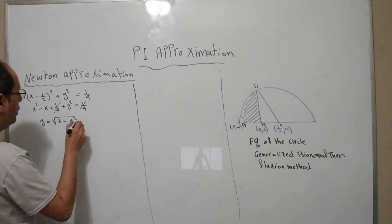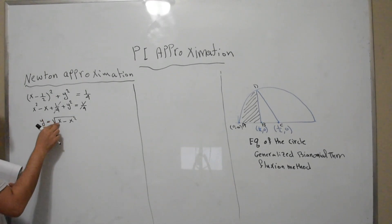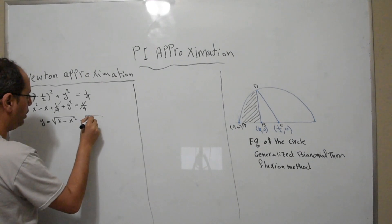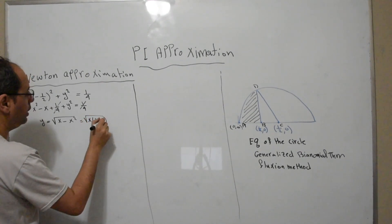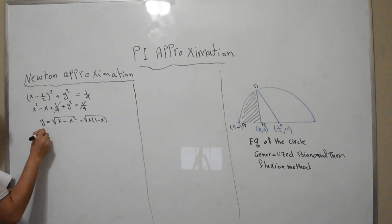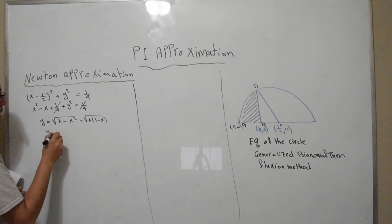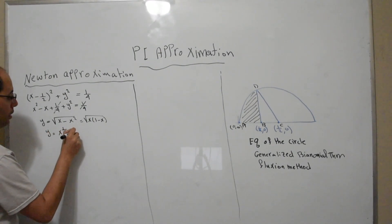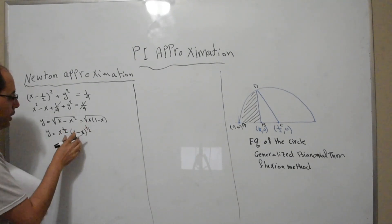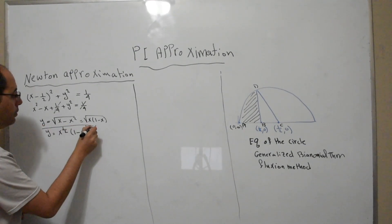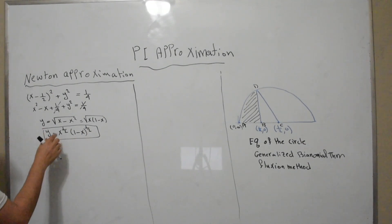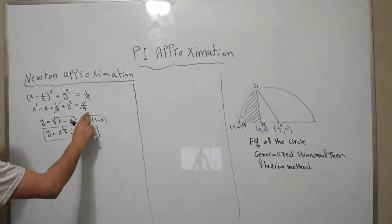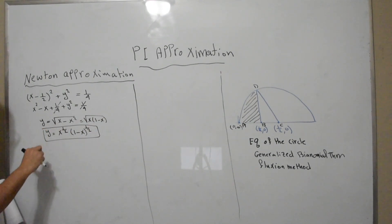We can factor that expression: y = √(x(1 − x)), which I can rewrite by splitting the square root into exponential form as y = x^(1/2) · (1 − x)^(1/2). I factored out x, split the square root, and converted to exponential form.